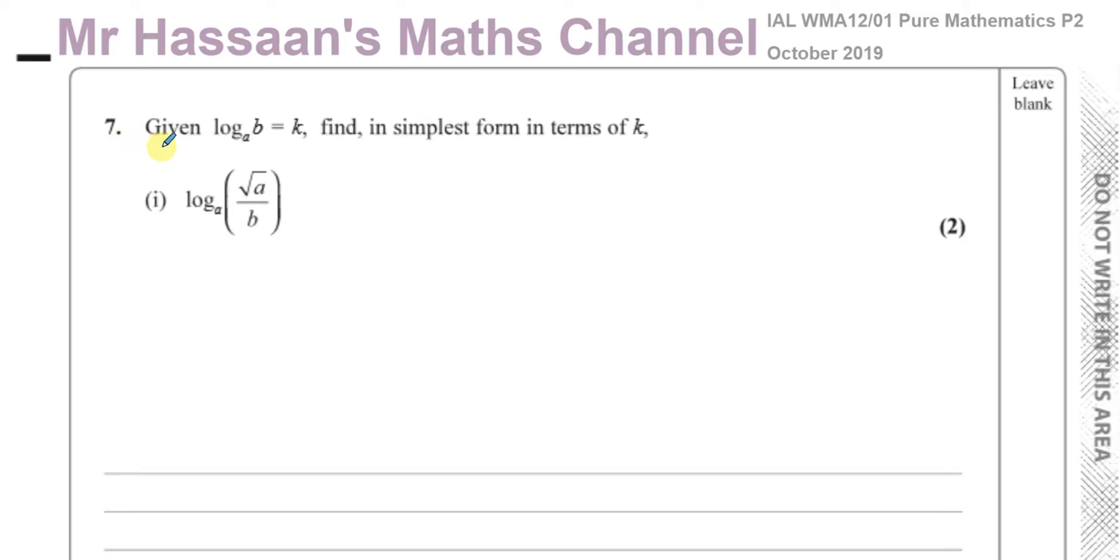This question is about logarithms, most of it. They told us, given that the log to the base A of B is equal to k, find in simplest form in terms of k, what log base A of root A over B is equal to. So we've got to express this in simplest terms, in terms of k.